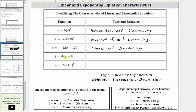Next we have f equals 44x minus 90. This equation is still in slope-intercept form, and therefore we have a linear equation. This time the slope m is positive, and therefore the behavior is increasing.